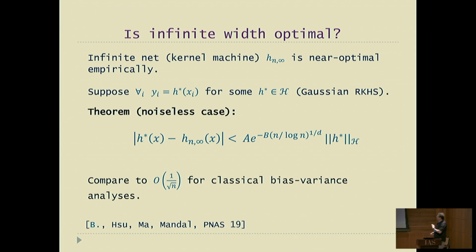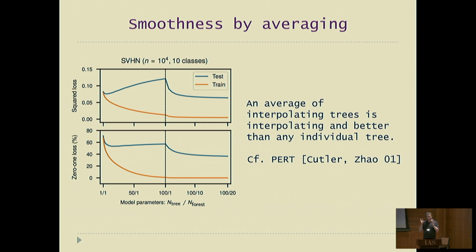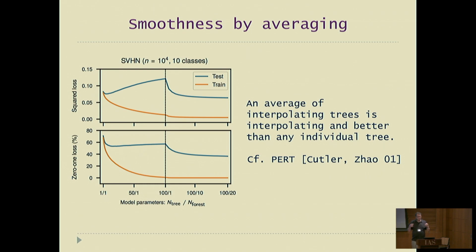Another way to increase smoothness is by averaging. Minimizing the functional norm chooses the smoothest functions. PERT, introduced in 2001, takes trees that interpolate the data and averages them — random trees. Each individual tree is pretty bad, but when you average an ensemble of them, you get a classifier that interpolates and is significantly better than any individual tree. The same kind of mechanism, but with different underlying gears.